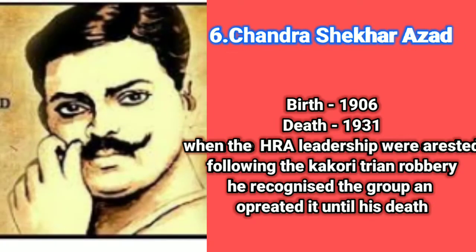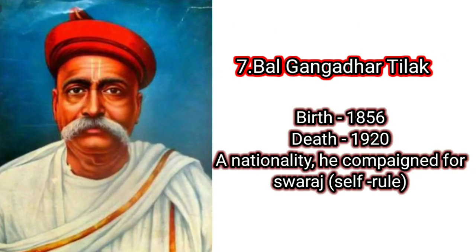6. Chandrasekhar Azad. Birth: 1906, death: 1931. When the HRA leadership were arrested following the Kakori train robbery, he reorganized the group and operated it until he died.